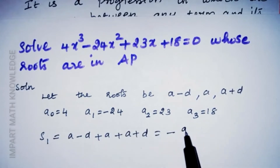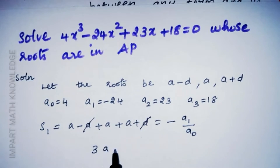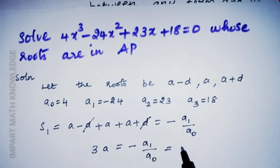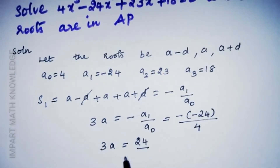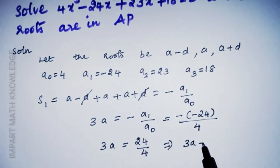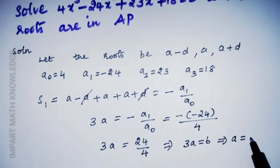The sum of the roots taken one at a time is (a-d) + a + (a+d) = -a₁/a₀. The d terms cancel, giving 3a = -a₁/a₀. With a₁ = -24 and a₀ = 4, we get 3a = 24/4 = 6, so a = 2.